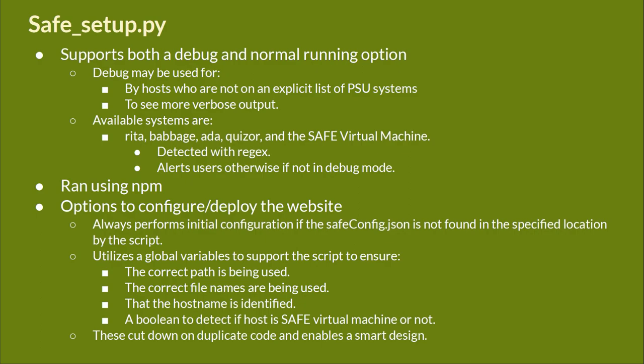It is run using npm to support a number of possible command line executions because of the system type. It also has a menu to support a variety of options to configure and deploy the website. The script will always run the first option if it doesn't detect the safeconfig.json in its specified directory, and once that's finished, the rest of the menu becomes available to the user. A lot of this is accomplished by using global variables which are set to use the correct path for the config file, ensure all the correct file names are being used, and identify the hostname. There's also a boolean that checks if the hostname is the virtual machine, which allows the script to bypass some unnecessary logic checks.